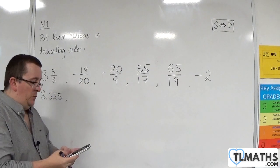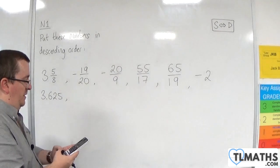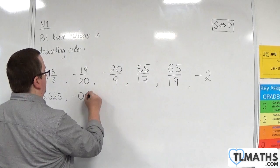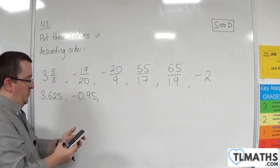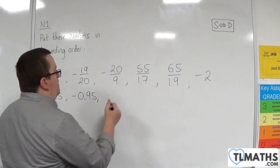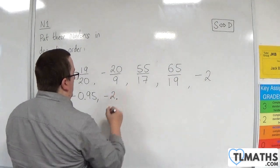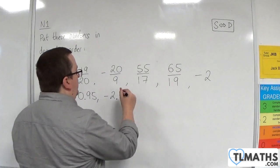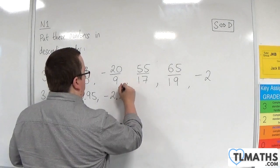Then we have minus 19 over 20, so minus 19 divided by 20 is minus 0.95. Minus 20 over 9, I get minus 2, and your calculator should give you minus 2.222222222222 forever, so it's minus 2.2 recurring.